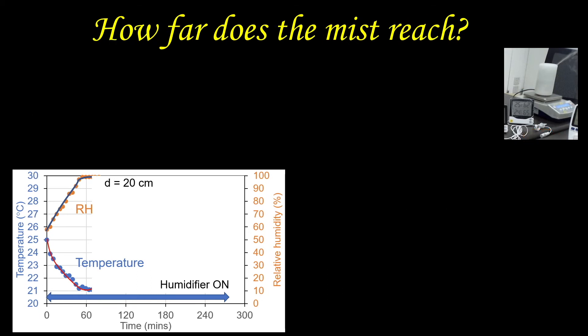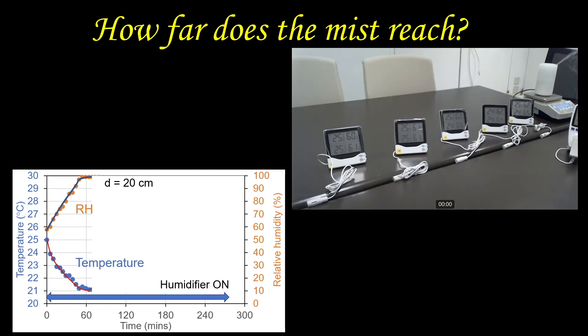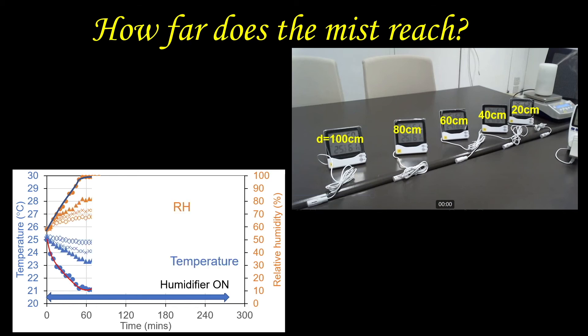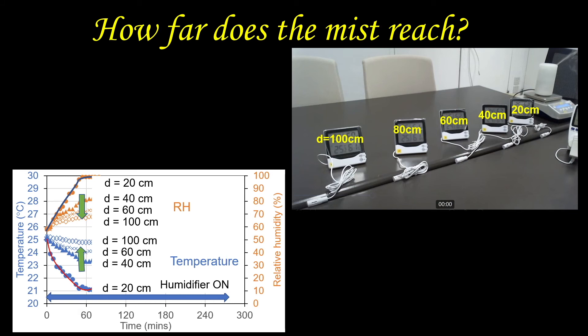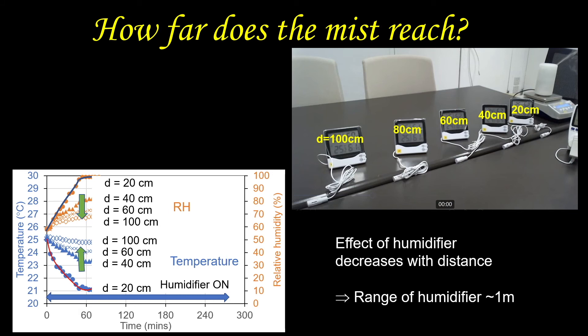We can see the range of the humidifier by measuring the temperature and relative humidities at different distances from the humidifier. We see that the effect of the humidifier decreases with distance. The changes in relative humidity are rather small when you are more than 1 meter away from the humidifier.